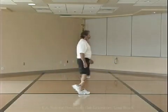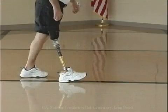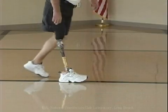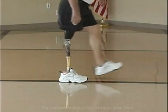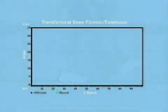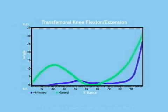Hyperextension of the knee is best seen at mid stance in the sagittal plane. The graph displays the prosthetic knee in extension throughout stance phase, compared with the sound knee which demonstrates 12 degrees of flexion at its peak.